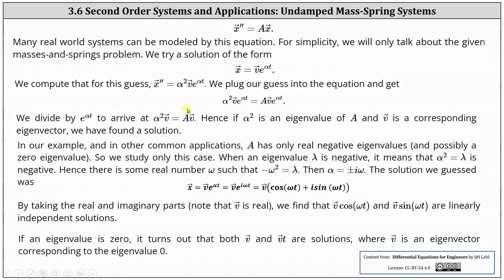Next, we divide both sides by e to the alpha T, giving us alpha squared times vector V equals A times vector V. Hence, if alpha squared is an eigenvalue of matrix A and vector V is a corresponding eigenvector, we have found a solution.